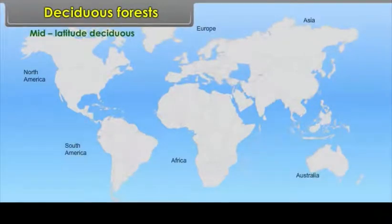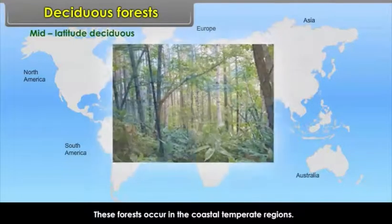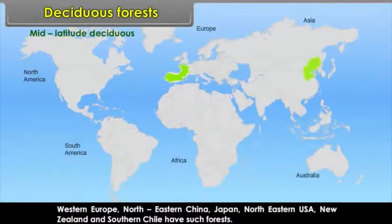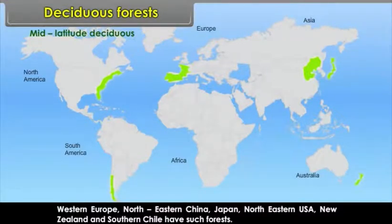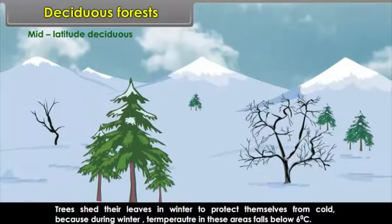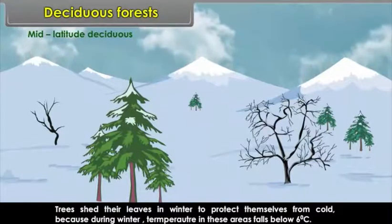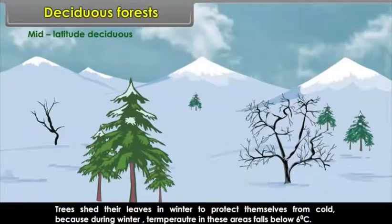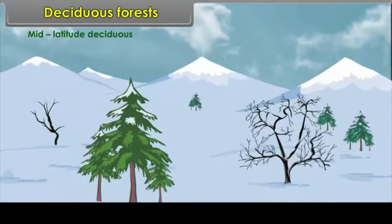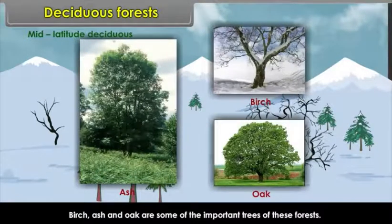Mid-latitude deciduous forests occur in the coastal temperate regions. Western Europe, Northeastern China, Japan, Northeastern USA, New Zealand and Southern Chile have such forests. Trees shed their leaves in winter to protect themselves from cold, because during winter, temperature in these areas falls below 6 degrees Celsius. Birch, Ash and Oak are some of the important trees of these forests.